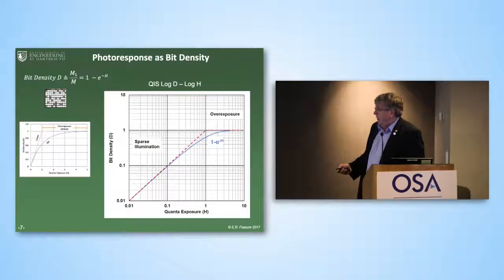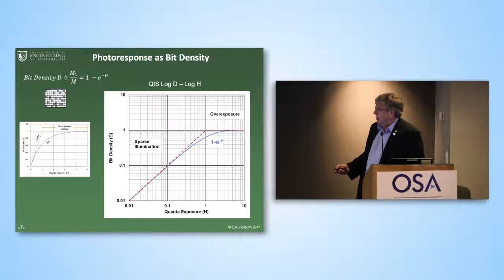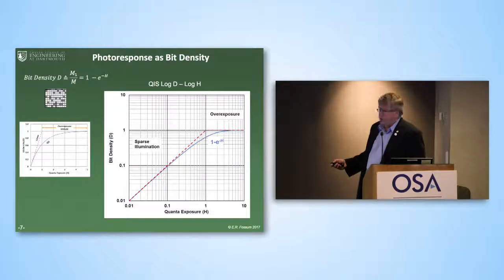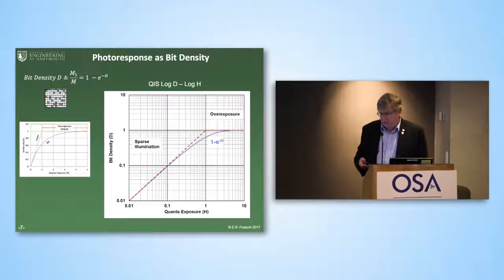If you plot the same data yet again on a log-log axis, you get a large linear region in the sparse illumination range, and then it starts to become nonlinear when you get up to saturation.